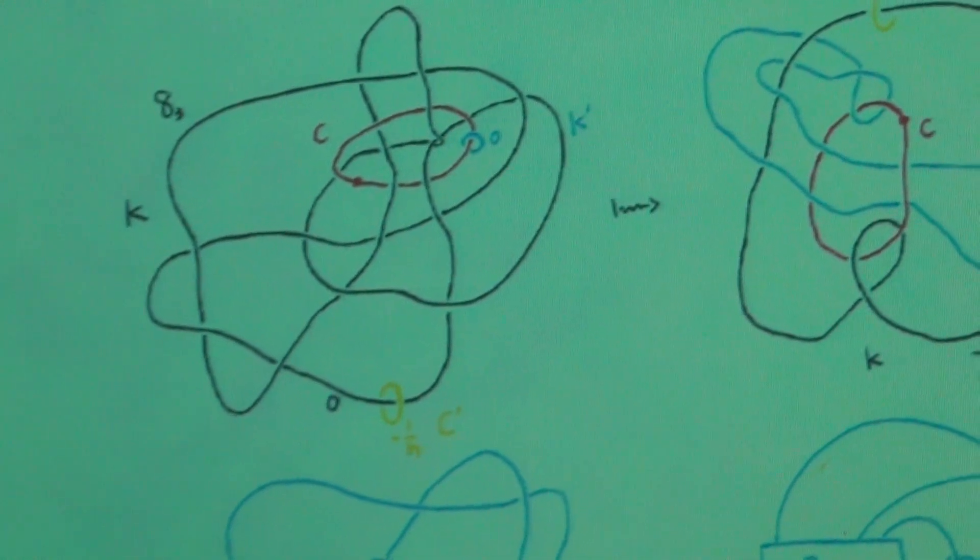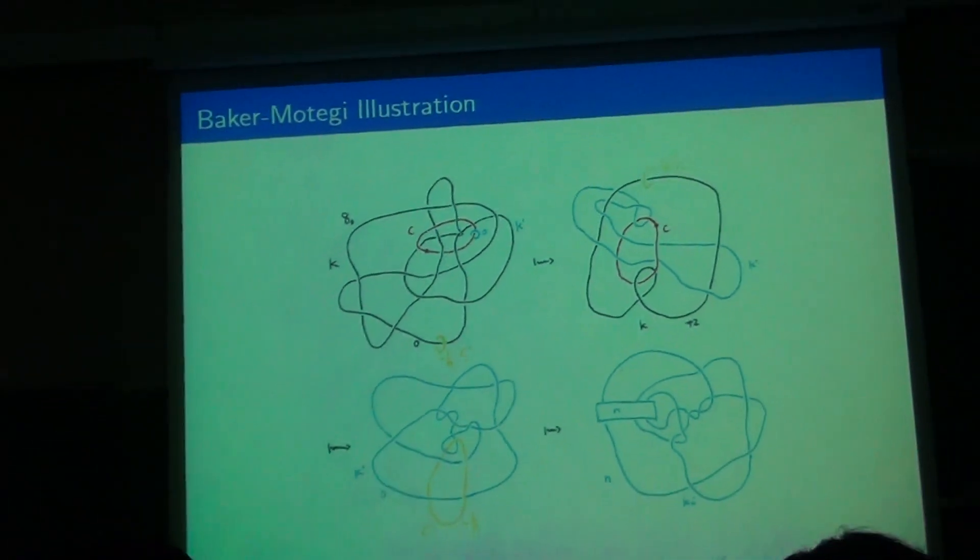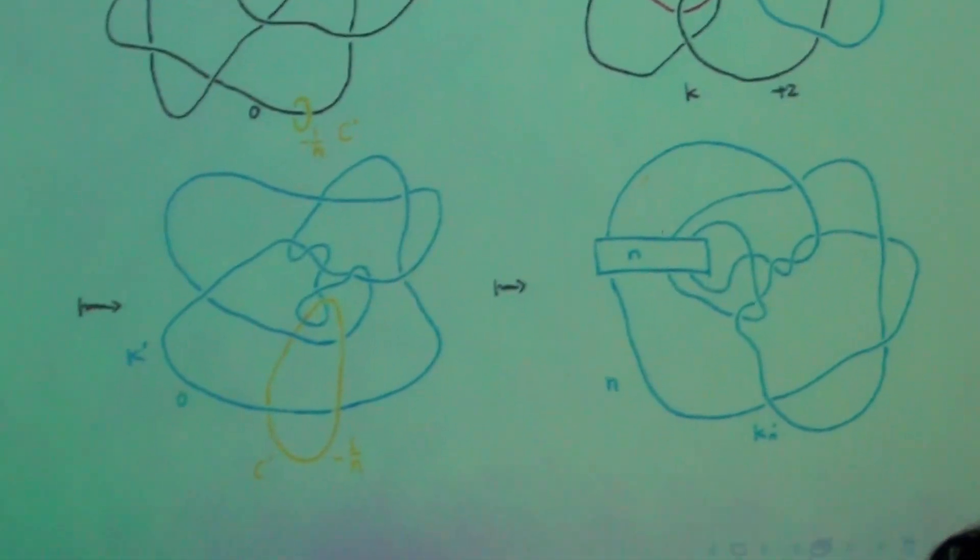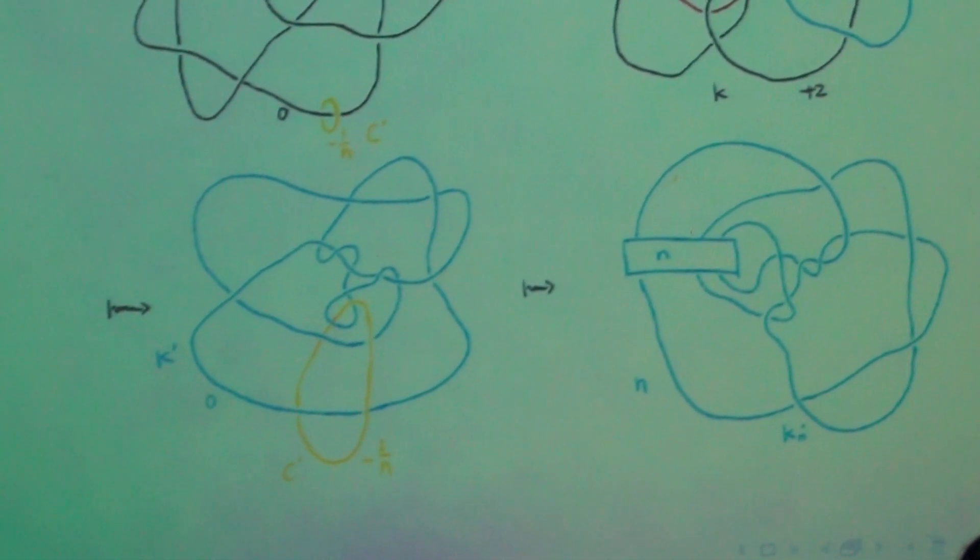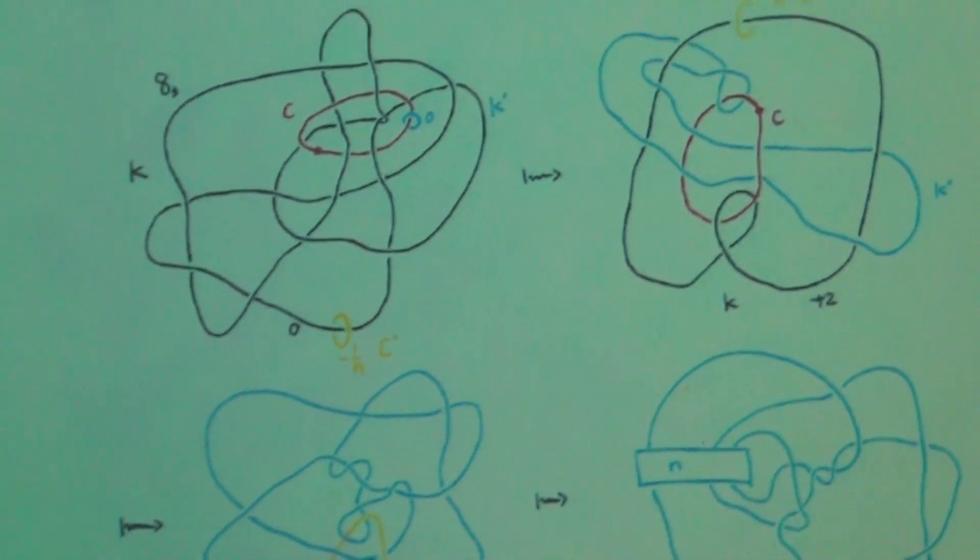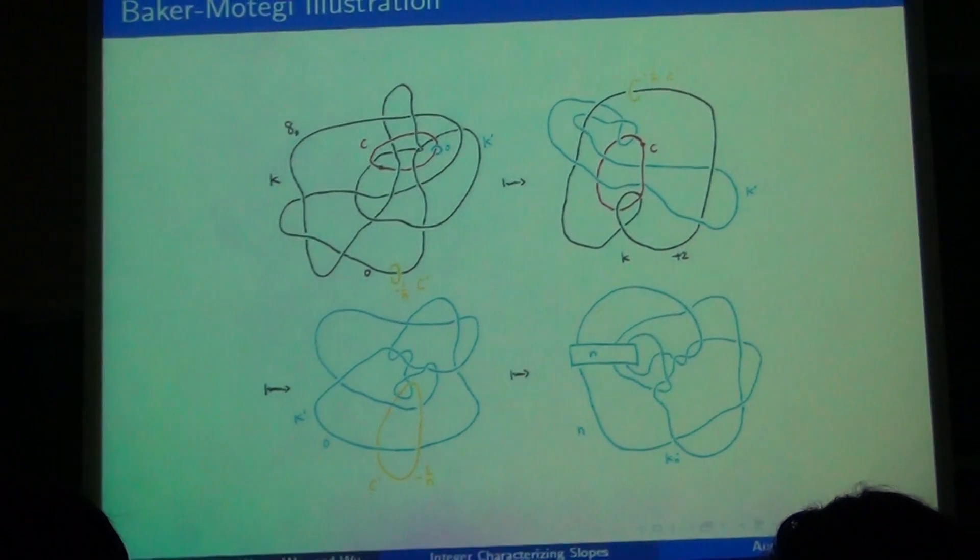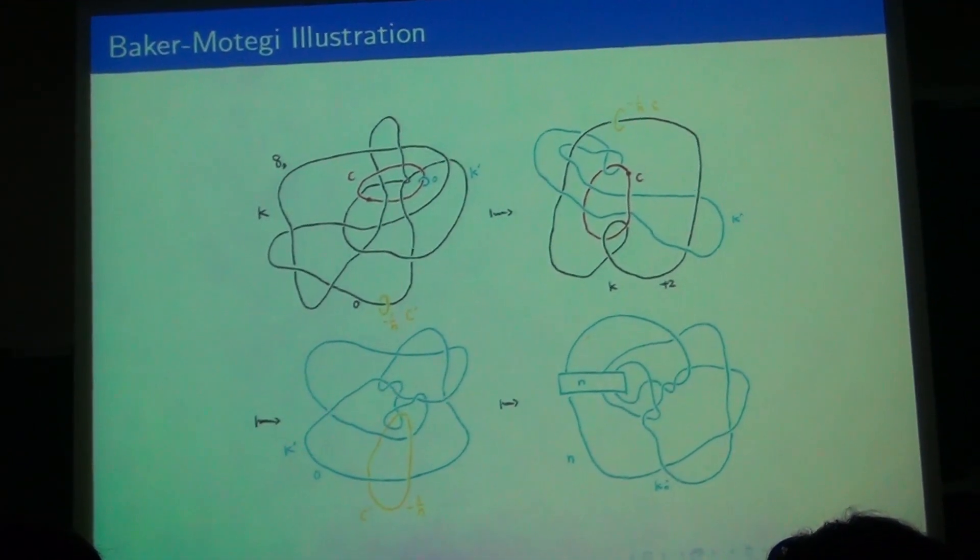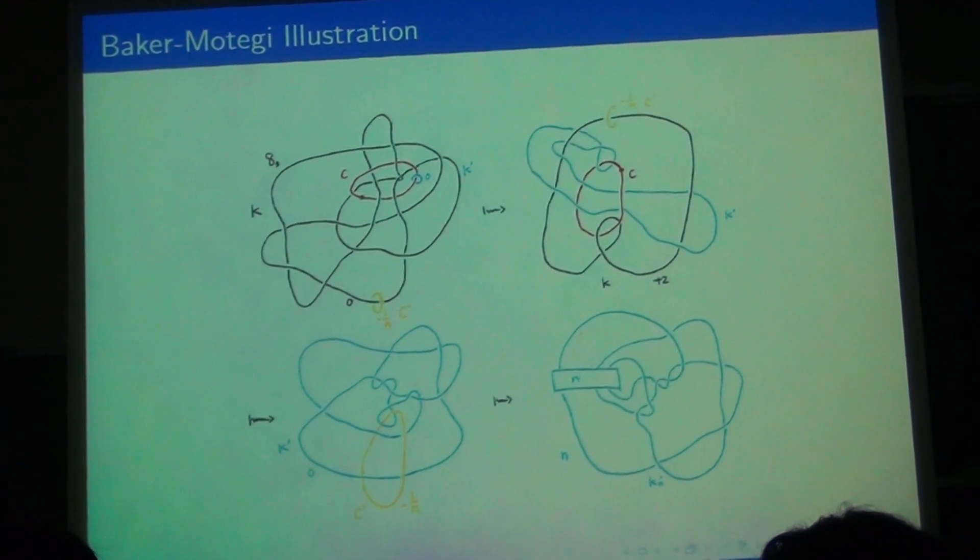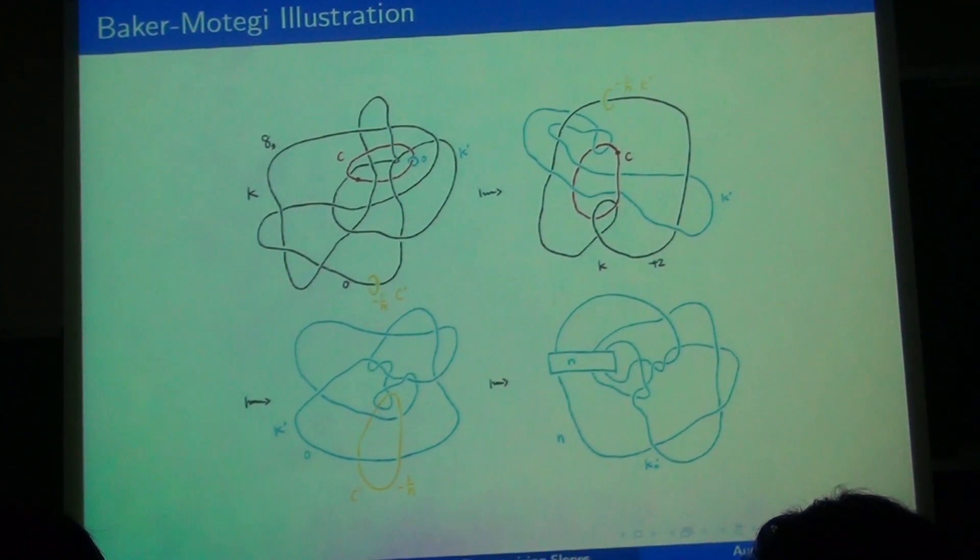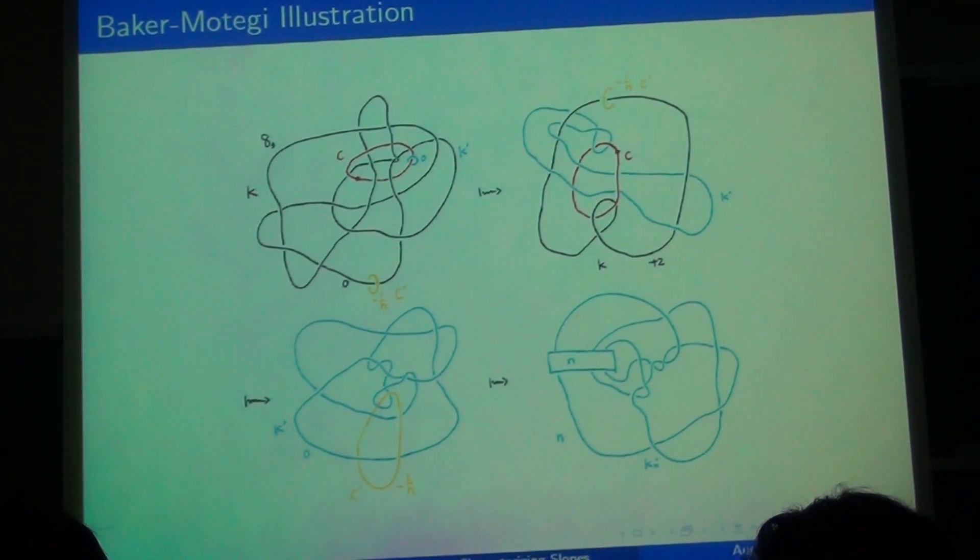We've added meridians to the two components, so the blue is the meridian to C, that's the surgery dual K prime that we defined. The yellow is the dual to K, which is C prime. Notice that C prime is minus one framed, so by a slam dunk move, we can delete it and change the framing on K to n. We can also remove blue and red from the light bulb trick. So this says that the diagram is the same as n surgery on K, and we want to show that it's also the same as n surgery on K_n prime.